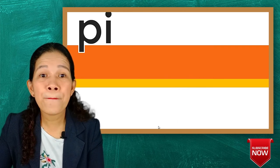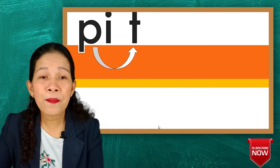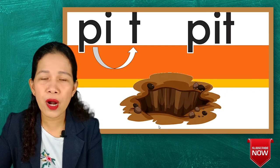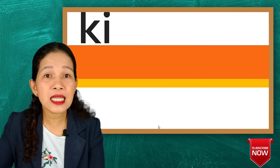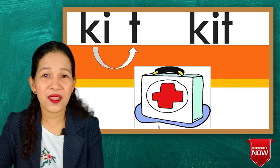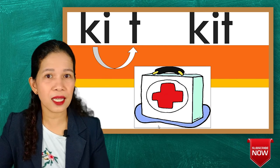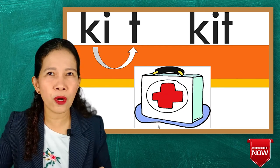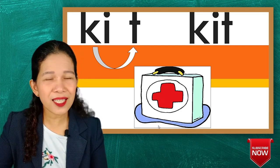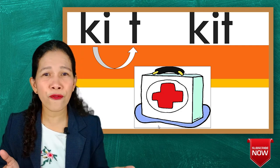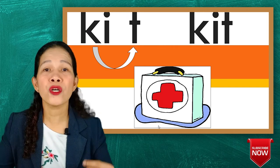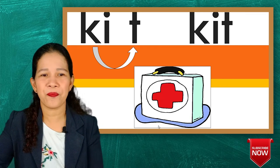Next: pi-ti, pit. This is a pit on the ground. Next is k-i-t, kit. This is a medicine kit. You can also have a makeup kit or tool kit — any kind of thing where you put tools or things that are being used, you call that kit.